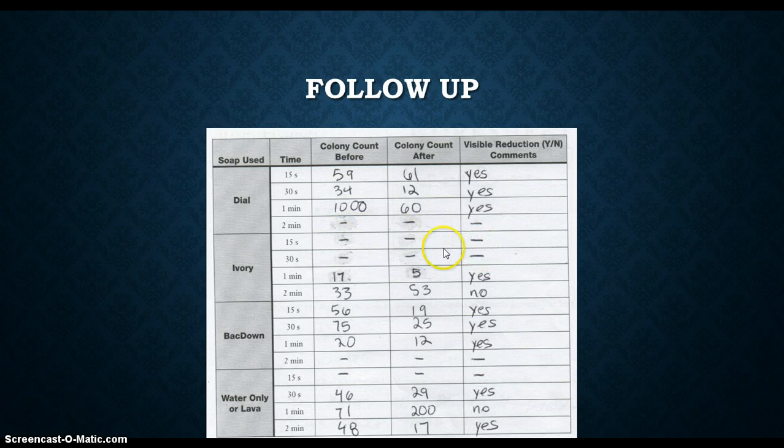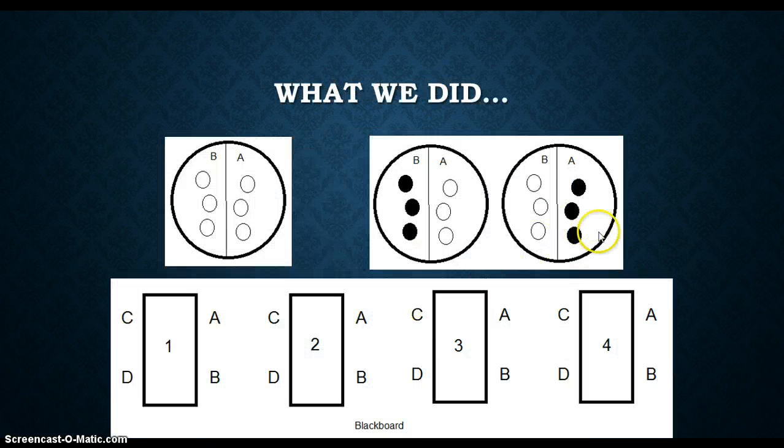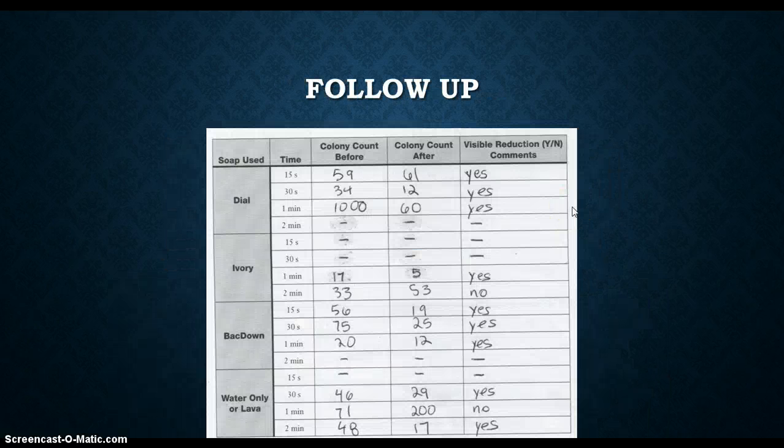Some of these have unidentifiable results, so you just don't make a comment there. But we do have these cases of going from 33 to 53, and then from 71 to 200. Those are the results where your before count was less than your after count.